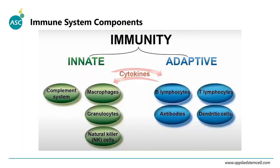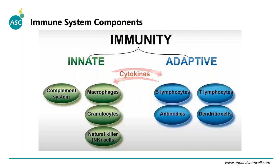The adaptive branch of immunity includes B cells, responsible for producing antibodies, and T cells, which divide into CD4-positive T-helper cells and CD8-positive cytotoxic T cells that can directly kill infected or cancer cells. Dendritic cells serve as primary antigen-presenting cells, bridging innate and adaptive immunity. Cytokines also bridge innate and adaptive immunity, as they are released by all cell types in the immune system.